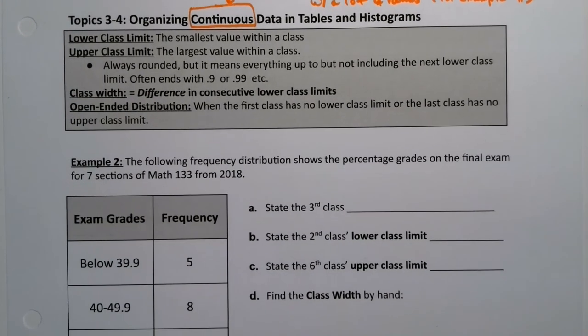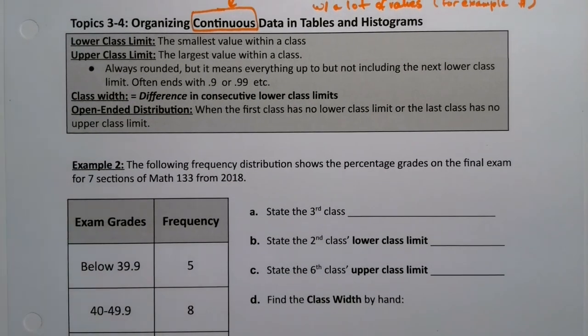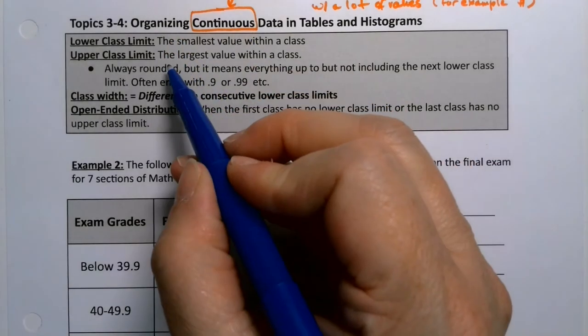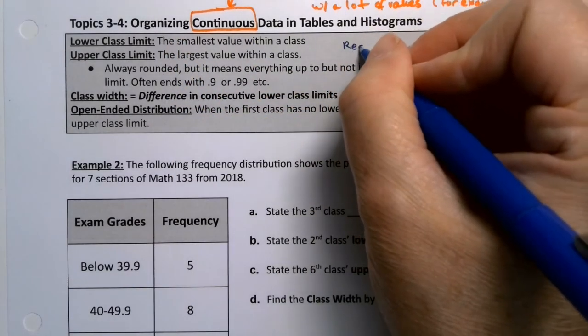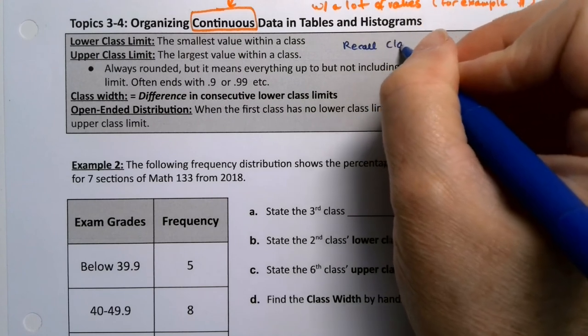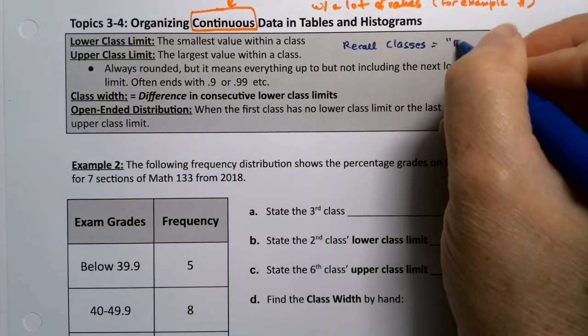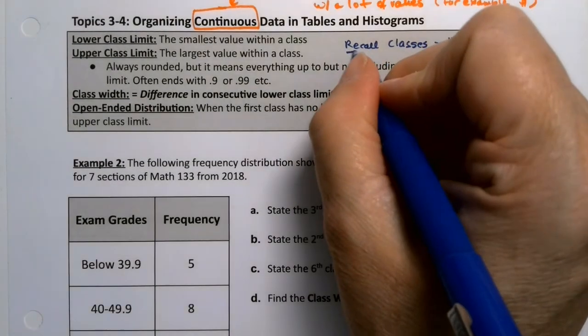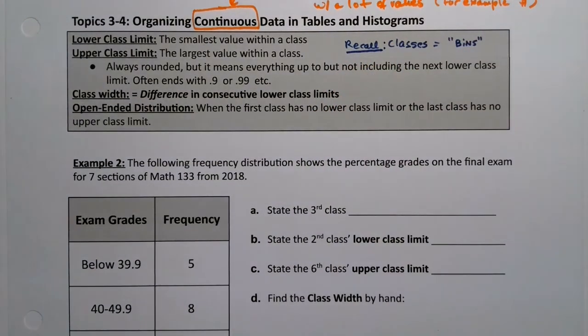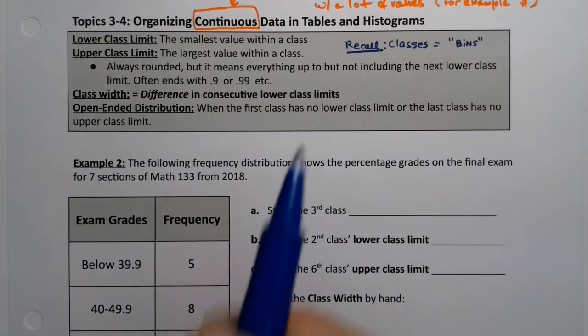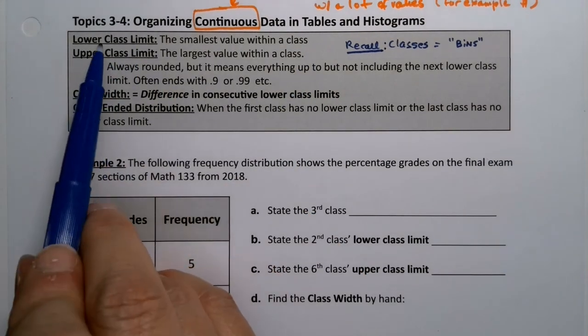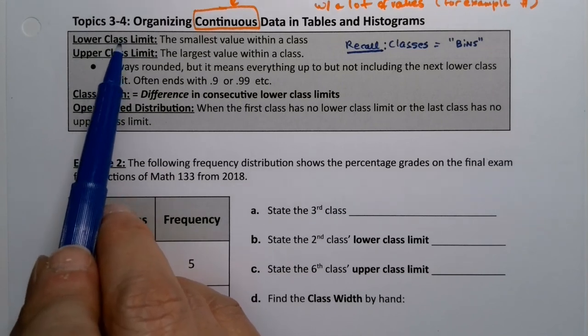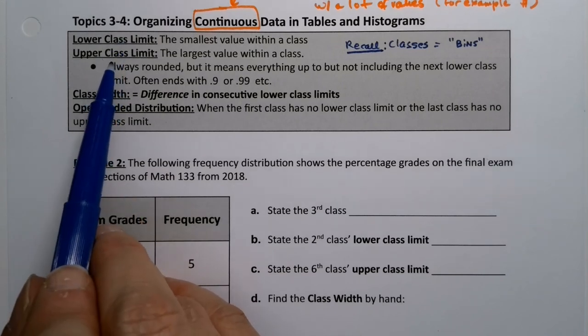If you remember, we've seen that definition before. The classes are the bins. And then in each bin, there'll be a lower class limit and upper class limit. Recall, the classes is the same thing as the bins. I always think of like plastic tubs into which you shove things. The classes are the bins. There's a lower class limit and an upper class limit. The lower class limit is the smallest value within the class. Upper class limit is the largest value within the class.